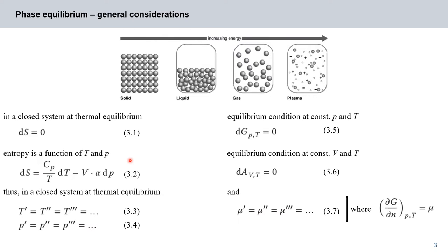Entropy can be described as a function of temperature and pressure. So dS equals cp over T times dT minus V times alpha dP, where cp is our heat capacity. Now imagine if we had areas of different temperature or pressure within such a closed system — that would start an irreversible balancing process, inevitably linked to an increase in entropy.